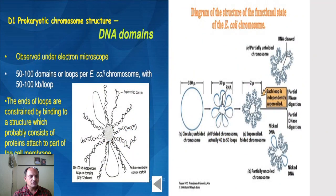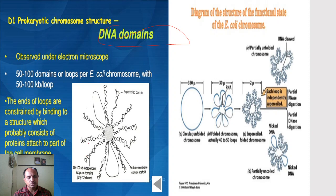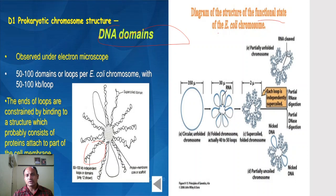The next diagram shows the prokaryotic chromosome structure — the DNA domains as observed under an electron microscope. There are supercoil domains, a protein membrane core or scaffold, and 50 to 100 kbp independent loops. The ends of these loops are constrained by binding to a structure consisting of proteins attached to the cell membrane. The next diagram shows the functional state of the E. coli chromosome.